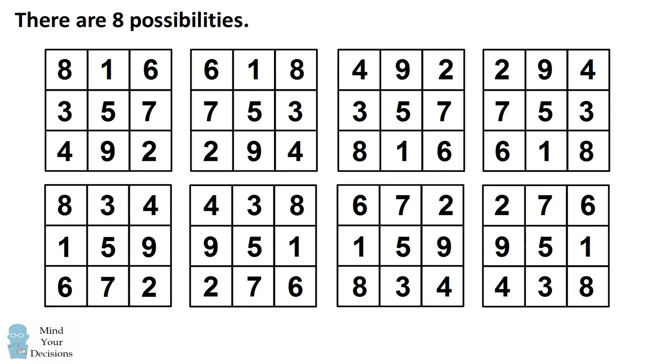The corners of each square are made up of the even numbers 2, 4, 6, and 8. The edges are made up of the odd numbers 1, 3, 7, and 9.